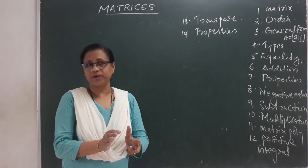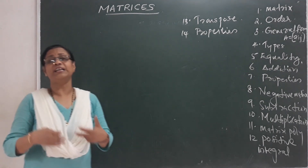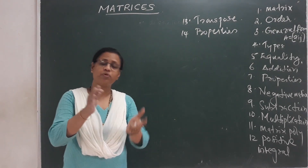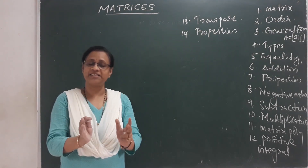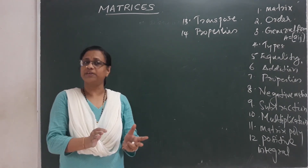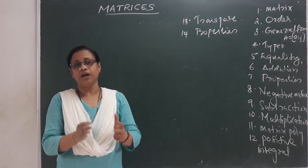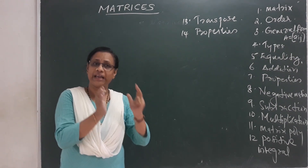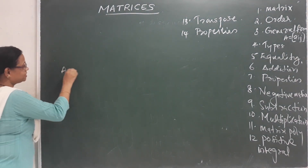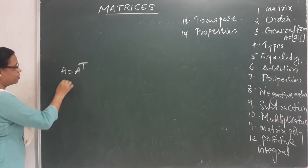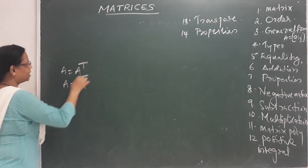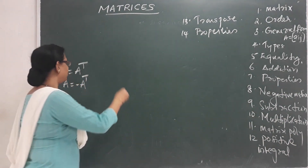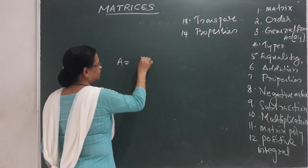Then we have the transpose properties. What is the symmetric matrix in the transpose? How many rows and columns are interchanged? When rows and columns are interchanged in the same way, the matrix is symmetric. For symmetric matrix: A is equal to A Transpose. For skew-symmetric matrix: A is equal to minus A Transpose.